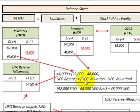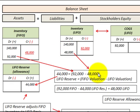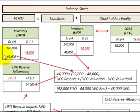The LIFO reserve equals our FIFO inventory valuation minus our LIFO inventory valuation, using the ending inventories we previously calculated. Our FIFO ending inventory was $92,000 and our LIFO ending inventory was $48,000, so the difference gives us a LIFO reserve of $44,000. We credit the LIFO reserve for $44,000. Remember, this LIFO reserve is a contra account to our FIFO inventory account. So taking the FIFO inventory of $92,000 (debit) and subtracting the LIFO reserve credit of $44,000 gives us inventory on a LIFO basis of $48,000.